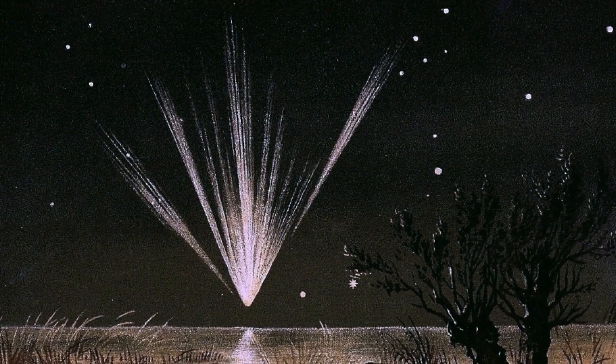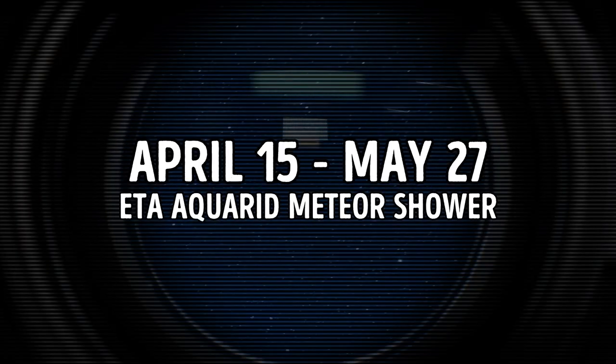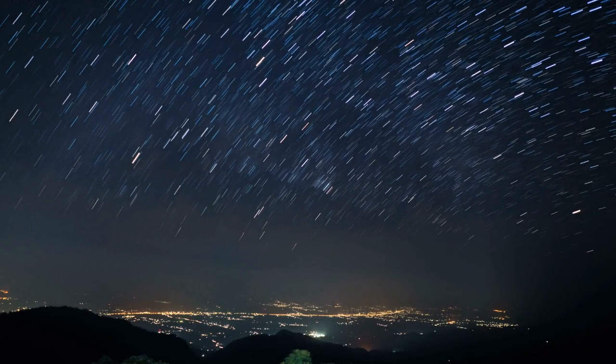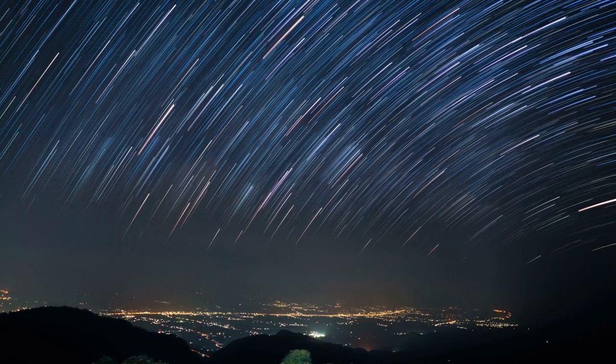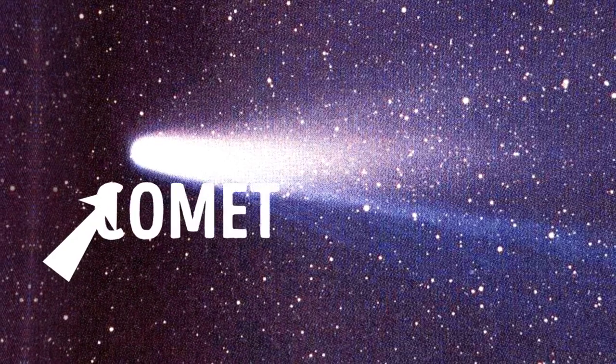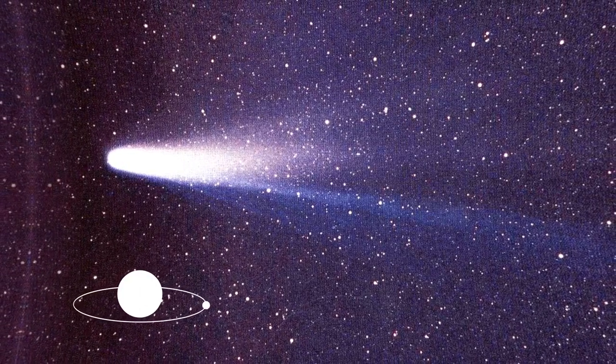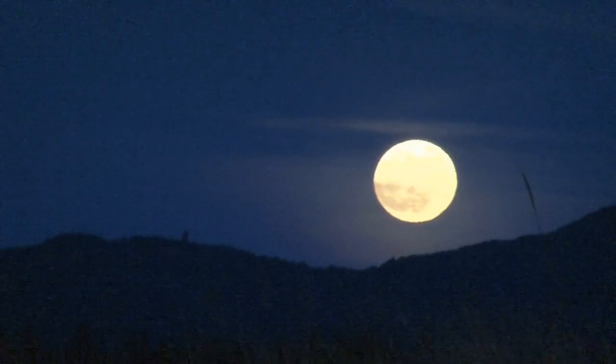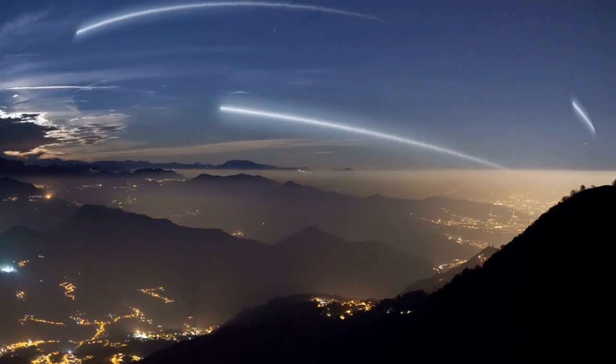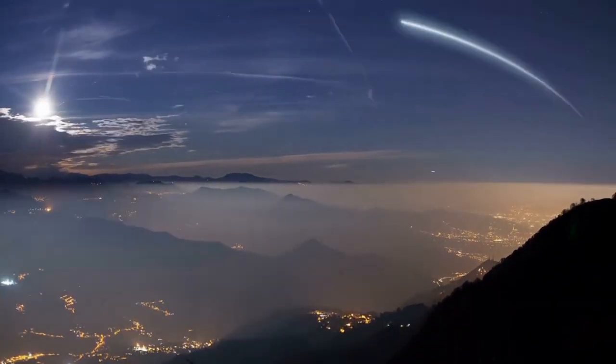But if you missed the Lyrid Meteor Shower, don't worry. You can still see Eta Aquarid Meteors from April 15th to May 27th. This meteor shower is famous for its fast meteors, leaving long, glowing trails. This shower is produced by the comet Halley, completing its orbit around the sun every 76 years. Unfortunately, the full moon that will appear on May 5th might outshine most of the meteors. But astronomers promise it'll still be a pretty impressive show.